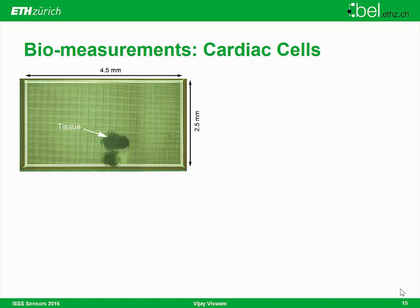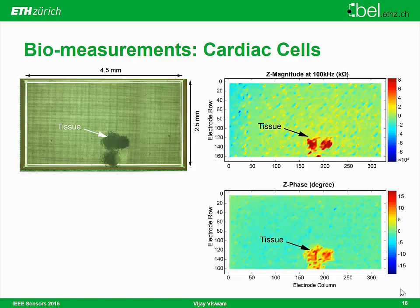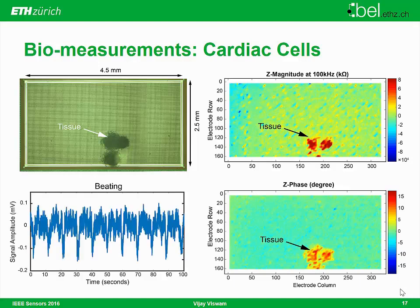Using this electrode array, we can place cells on it. For example, we placed embryonic stem cells and put them on top of the electrode array, where they aggregated into a tissue. With the right conditions, this tissue can be differentiated into cardiac cells. Since we have both impedance and electrophysiology capability, we can observe cell position and attachment through the magnitude and phase of the impedance. After five days of proper attachment on the electrode array, we can observe the beating of these cardiac cells through electrophysiology recording.